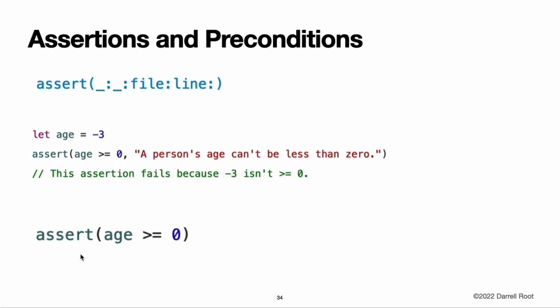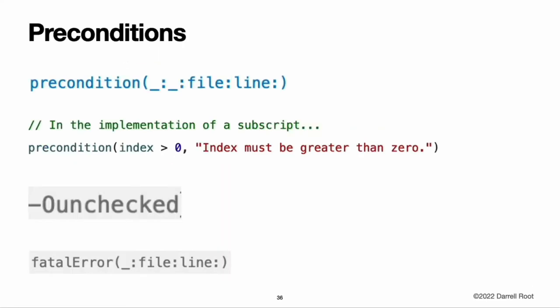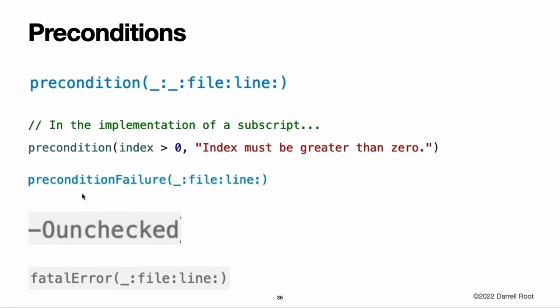You can omit the assertion message, for example when it would just repeat the condition as prose. If the code already checks the condition, you use the assertionFailure function to indicate that an assertion has failed. Enforcing preconditions: use a precondition whenever a condition has the potential to be false, but must definitely be true for your code to continue execution. For example, use a precondition to check that a subscript is not out of bounds, or to check that a function has been passed a valid value. You write a precondition by calling the precondition function, passing an expression that evaluates to true or false and a message to display if the result of the condition is false.